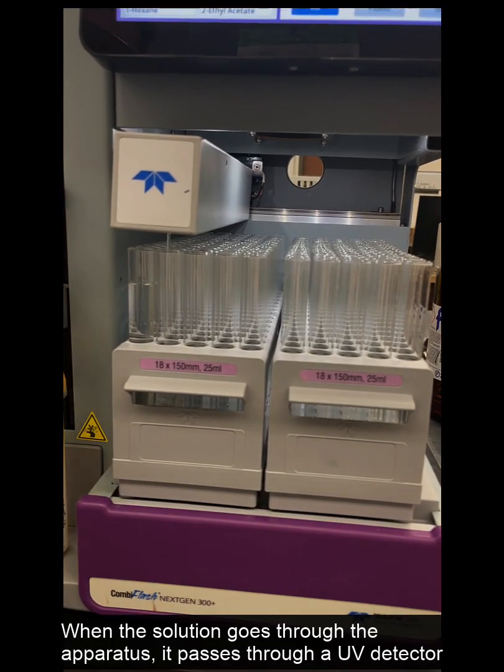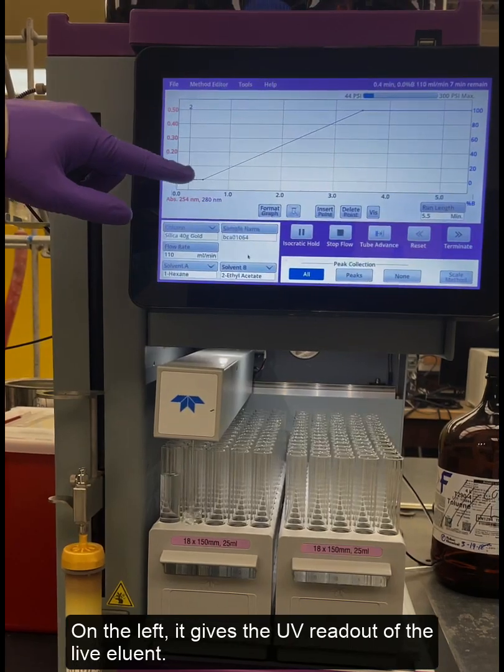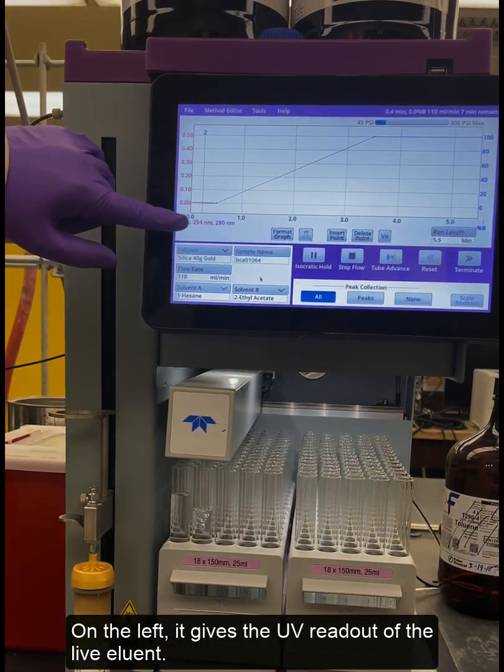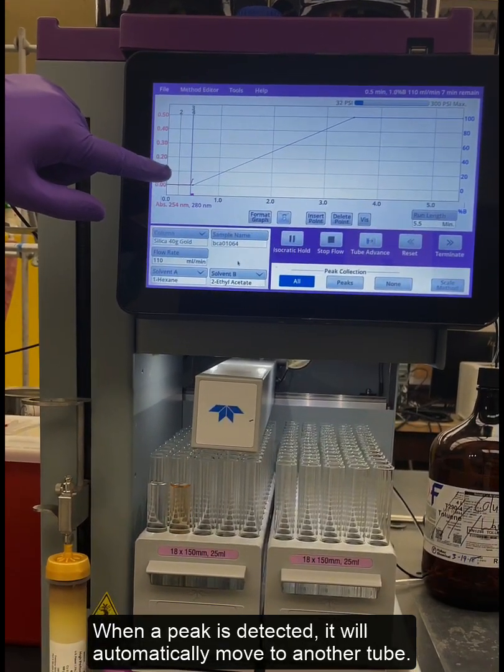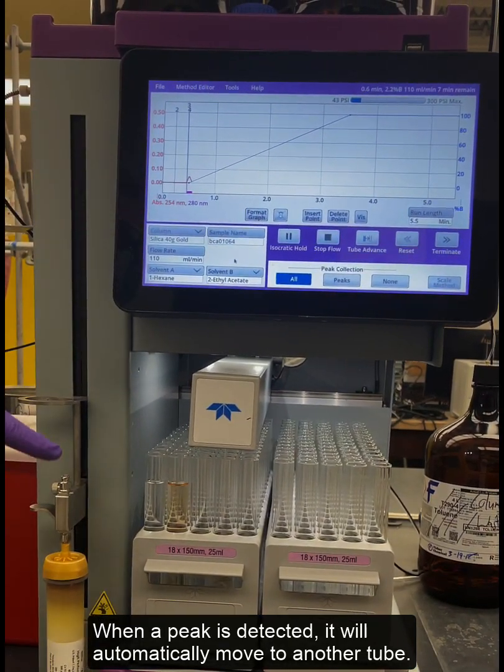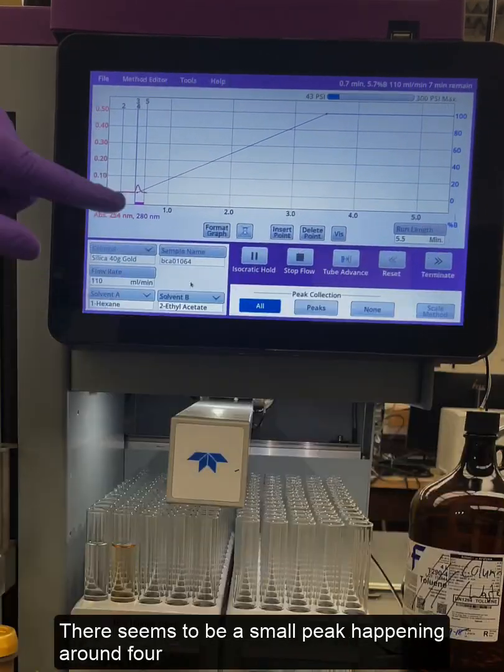When the solution goes through the apparatus it goes through a UV detector. On the left will give the UV readout of the live element. When a peak is detected it will automatically move to another tube in order to get the best peak-to-peak resolution. As you see right there, there seems to be a small peak happening around four.